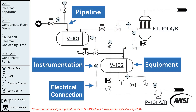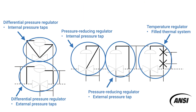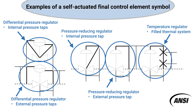Here is an example of how to read a piping and instrumentation drawing from what we just discussed. These specific diagrams are adapted from Table 13 and Table 23 of ANSI/ISA 5.1-2024 and are examples of how to read instrumentation symbols, specifically a self-actuated final control element symbol.